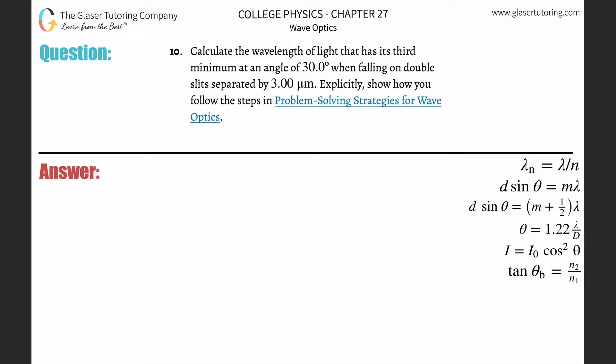Number 10: calculate the wavelength of light that has its third minimum at an angle of 30 degrees when falling on double slits separated by three micrometers. Explicitly show how you follow the steps in the problem.